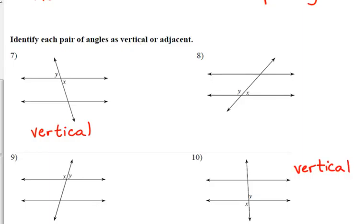Eight and nine are adjacent. You may also call eight and nine a linear pair. That's another term that can be used there. They are a linear pair because together they make up a straight line.